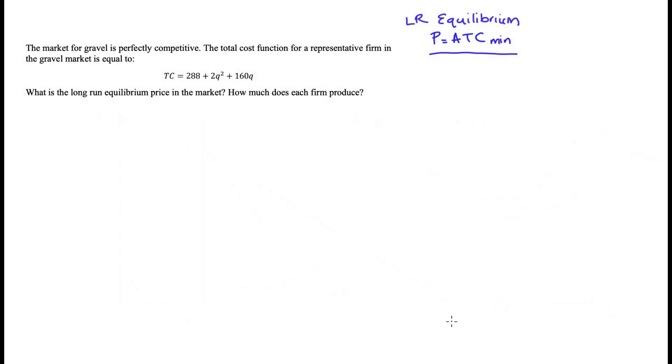The second thing that we need to know, which is really going to help us, is that the marginal cost function for the firm intersects average total cost at its minimum. So just that point here where marginal cost hits average total cost, that's going to be ATC min, and we're going to use this to our advantage. We're going to find average total cost minimum by finding our marginal cost function, our average total cost function, and then setting them equal to one another.